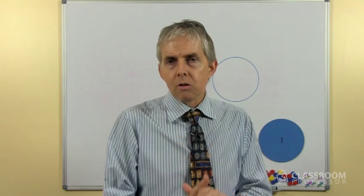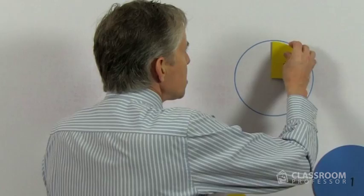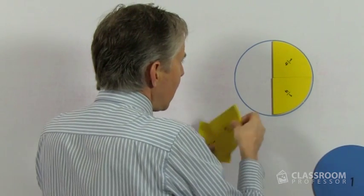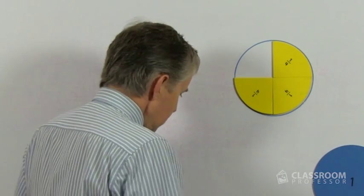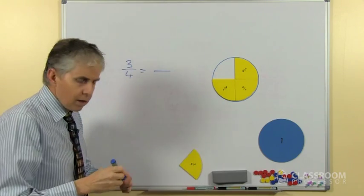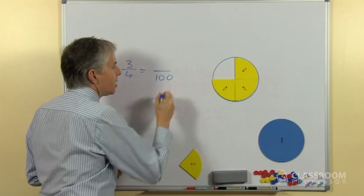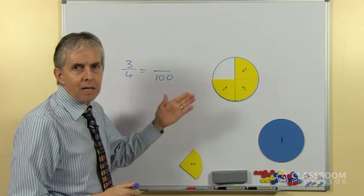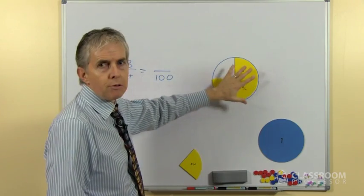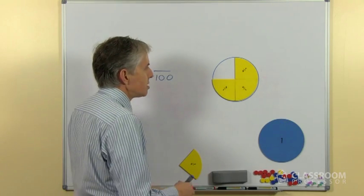We're going to extend that now and look at hundredths. In the first worksheet you'll see we have 3 quarters as a fraction and we're going to convert that into hundredths. We want the students to work out what equivalent fraction there is for 3 quarters where the denominator is 100 — in other words, how many hundredths are the same as 3 quarters. One of the beauties of the software is that it will show you hundredths in a blink because it's designed to do that.